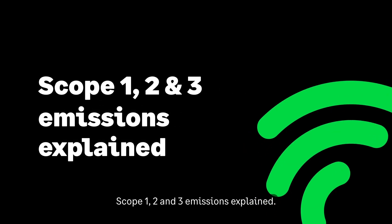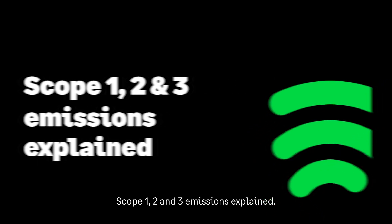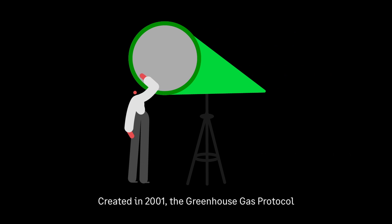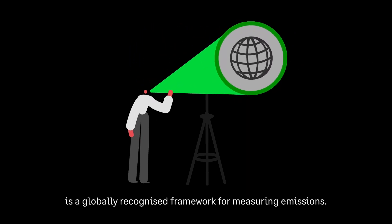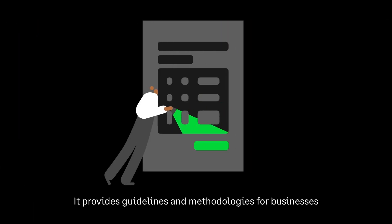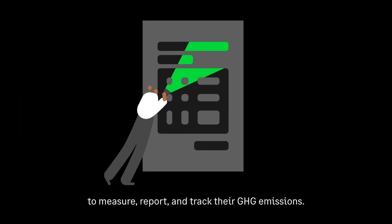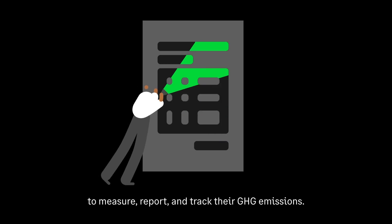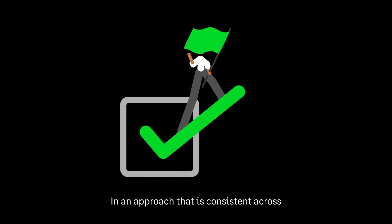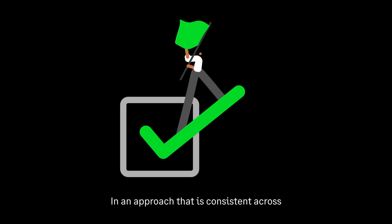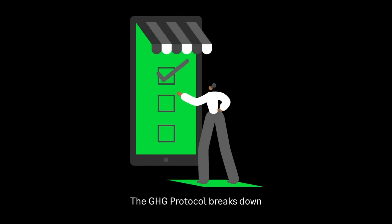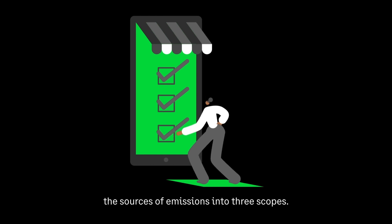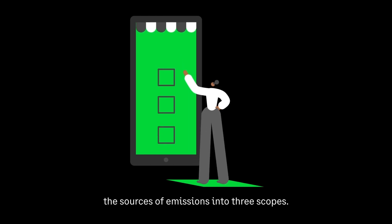Scope 1, 2 and 3 Emissions Explained. Created in 2001, the Greenhouse Gas Protocol is a globally recognised framework for measuring emissions. It provides guidelines and methodologies for businesses to measure, report and track their GHG emissions in an approach that is consistent across industries, governments and countries. The GHG Protocol breaks down the sources of emissions into three scopes.